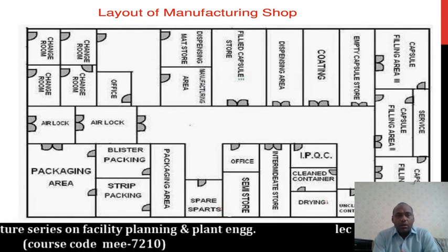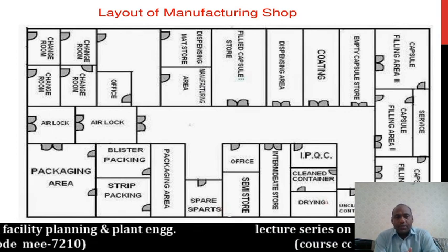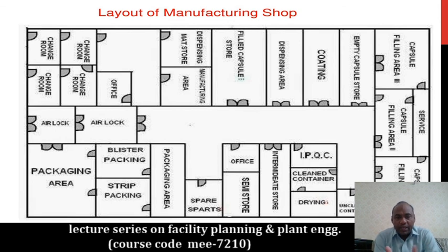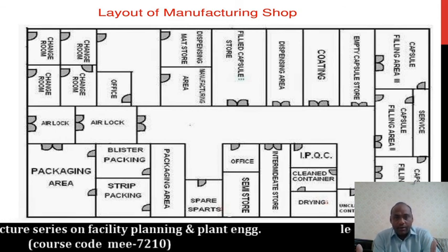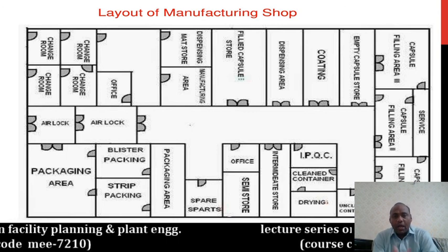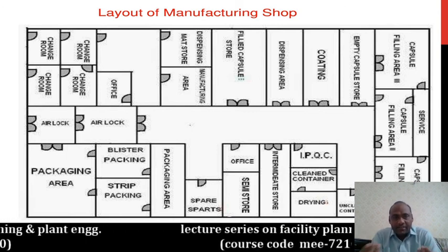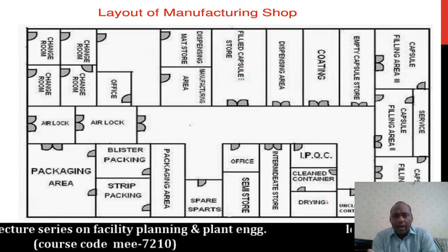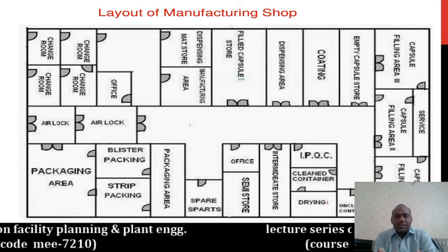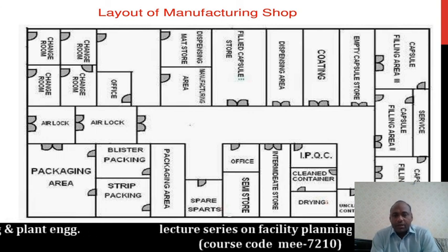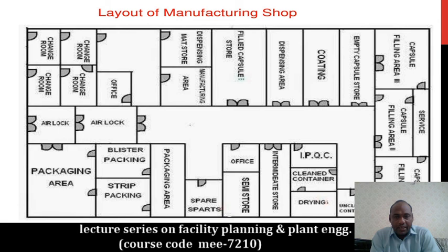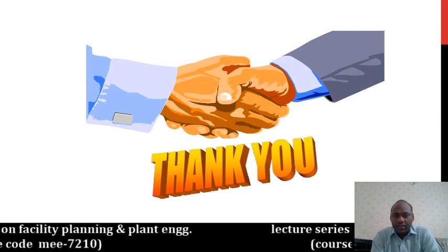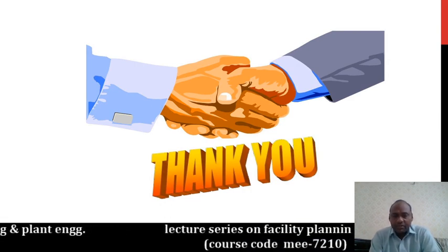A simple layout of manufacturing shops is shown with different types of areas and specific dimensions — for example, a coating department, dispensing area, field area, and machines area. All are arranged in your planning. This covers all the important aspects of facility planning in the manufacturing area. Thank you very much.